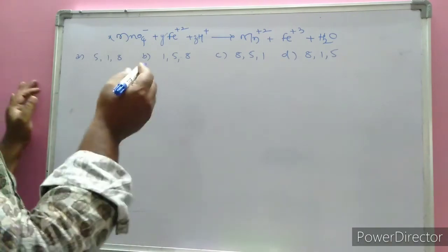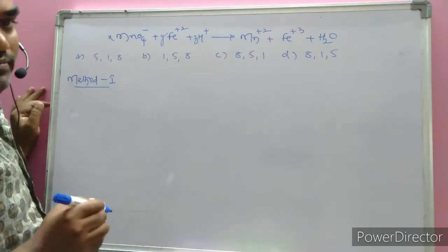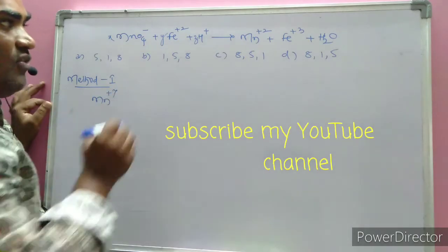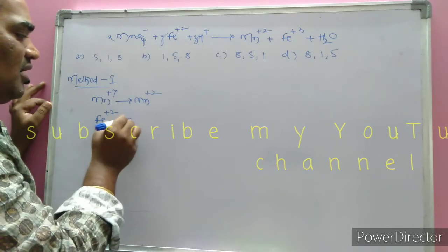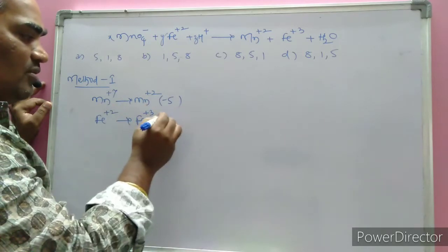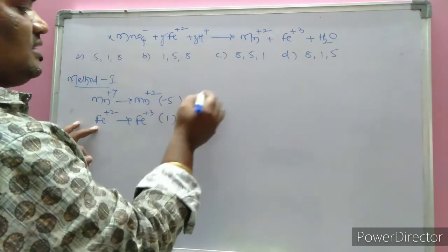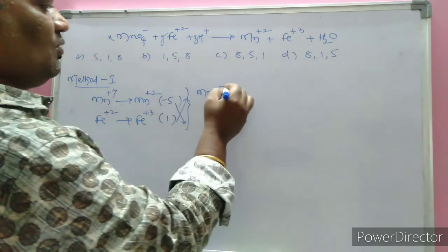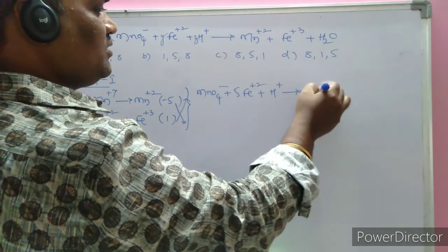One more redox equation example — for objective exams, Method 1 and Method 2 are suggested. The oxidation state of manganese in MnO4⁻ is +7, which changes to Mn²⁺. Iron (ferrous, Fe²⁺) becomes ferric (Fe³⁺). The change in oxidation number for manganese is +2 minus +7 equals minus 5; for iron the change is +1. By cross-multiplication, the coefficient of manganese (MnO4⁻) is 1 and the coefficient of iron is 5.